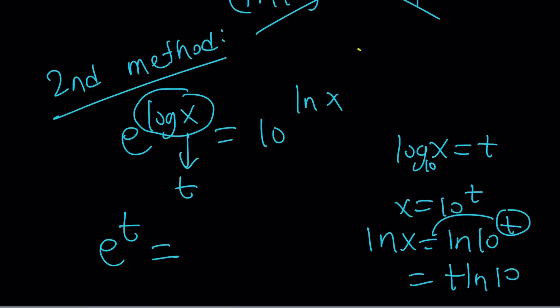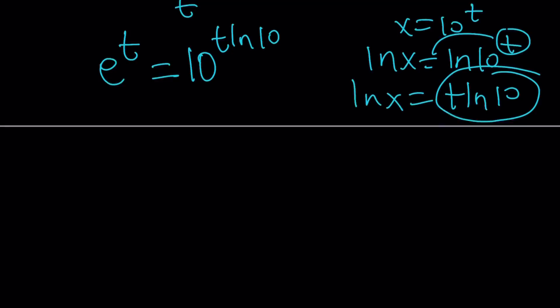And ln x is ln 10 to the power t. And that is just t times ln 10. So, let's go ahead and replace ln x with t times ln 10. This is going to give us 10 to the power ln x, which is 10 to the power t ln 10.